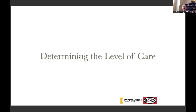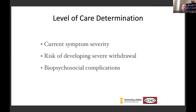Moving on to level of care — I'm basically talking about ambulatory versus inpatient or residential treatment. ASAM divides ambulatory care into two levels: level one is essentially every doctor's office, and level two is a much more extended treatment facility where the patient can come in, be evaluated, stay for a large portion of the day, and be reevaluated. Level two is very uncommon; I'm not aware of any providers in Idaho that provide level two care. When thinking about level of care determination, there are three broad categories: how bad are their symptoms right now, what's the risk of developing severe withdrawal, and what are the biopsychosocial complications.